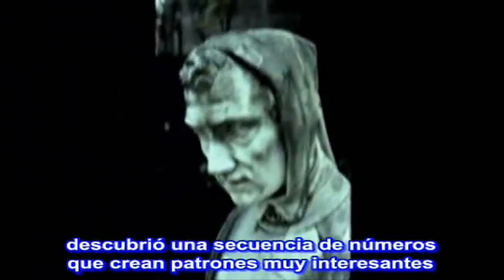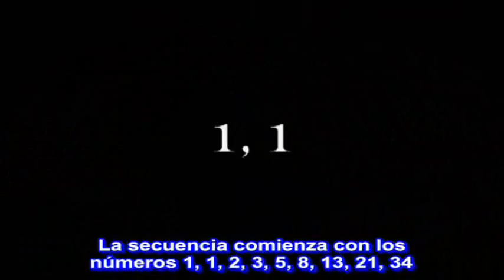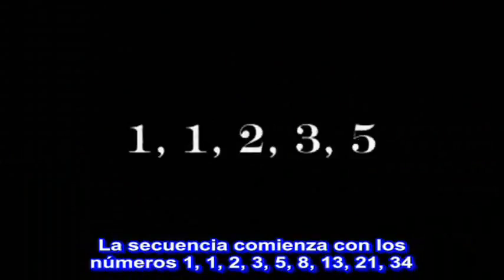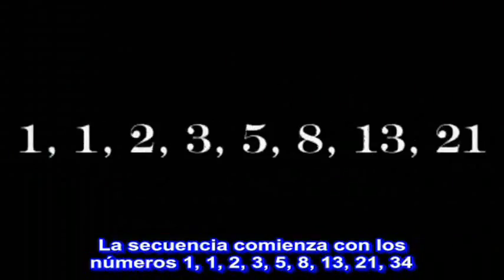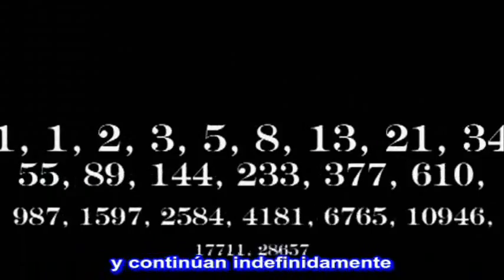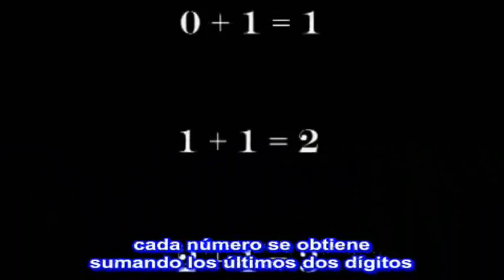Around 1200 A.D., a man named Leonard Pisano, better known as Fibonacci, discovered a sequence of numbers that created a very interesting pattern. The sequence begins with the numbers 1, 1, 2, 3, 5, 8, 13, 21, 34, and continues indefinitely. Each number is obtained by adding the last two digits together.